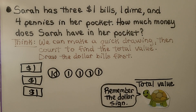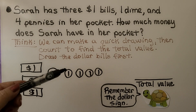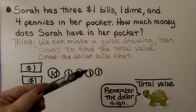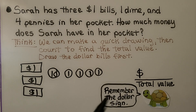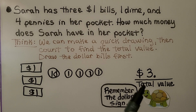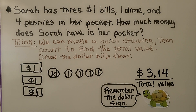Then we can count them. We have $3, $3.10, $3.11, $3.12, $3.13, $3.14. We remember to write the dollar sign first, then a three for the three dollars, then a decimal point, then 14 cents. $3.14 is what she has in her pocket.